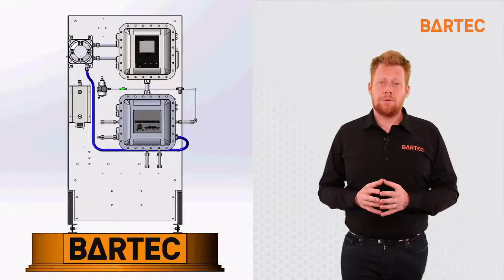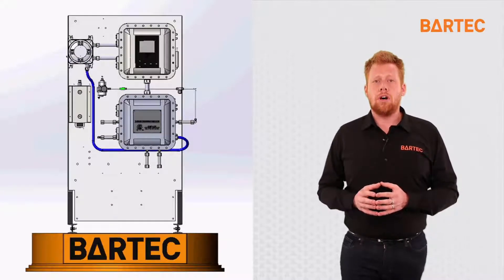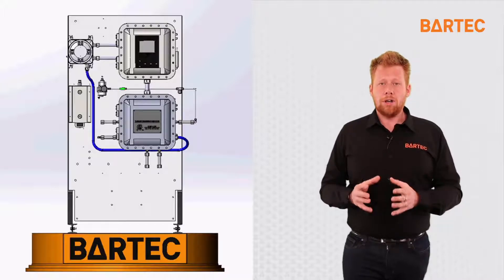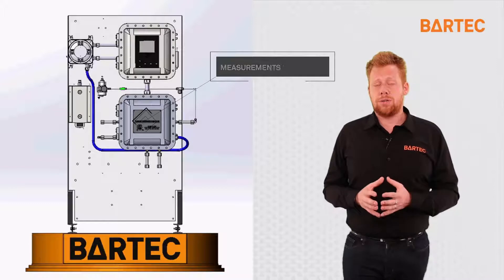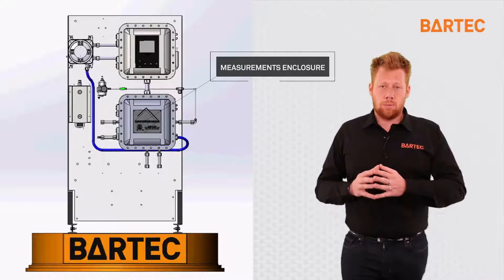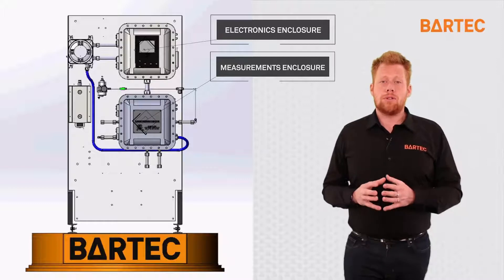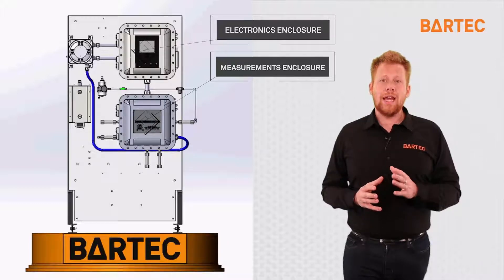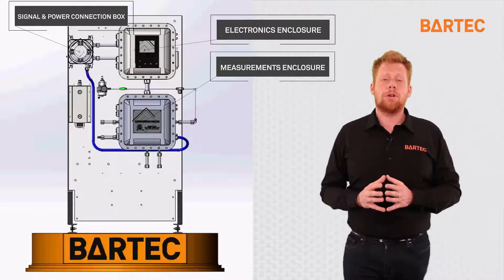To my right is a 3D model of the P700. The P700 is composed of three enclosures. The bottom enclosure at the bottom right is a measurements enclosure where the measurement actually takes place. The top right enclosure is the electronics enclosure where the signals are processed. And to the top left, we have a signal and power connection box.